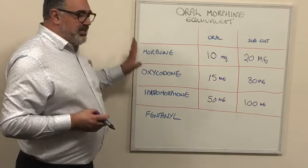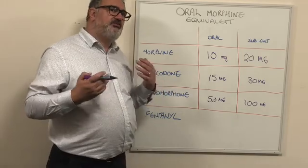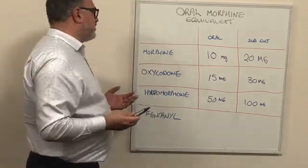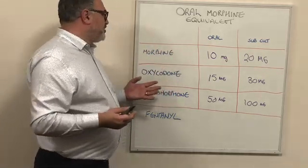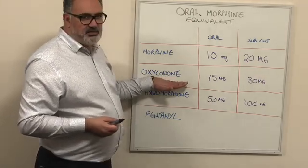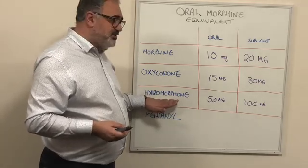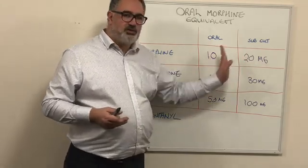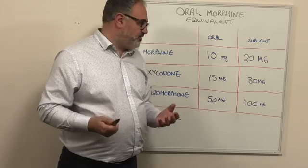To recap on these three opioids — the ones you're most likely to see in oral and subcutaneous preparations: oxycodone is one and a half times as potent as morphine; hydromorphone is about five times as potent as morphine. And the conversion between oral and subcutaneous preparations is always twice as potent when given parenterally.